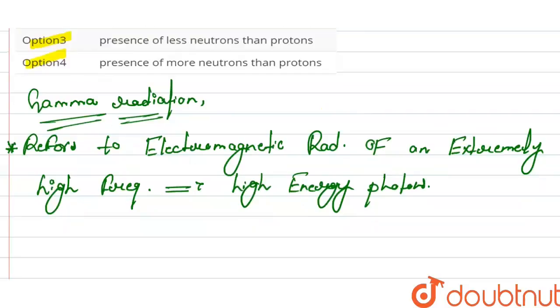We know that gamma rays are ionizing radiation.